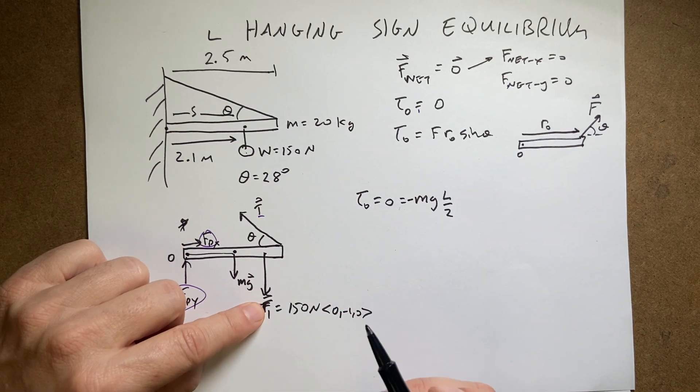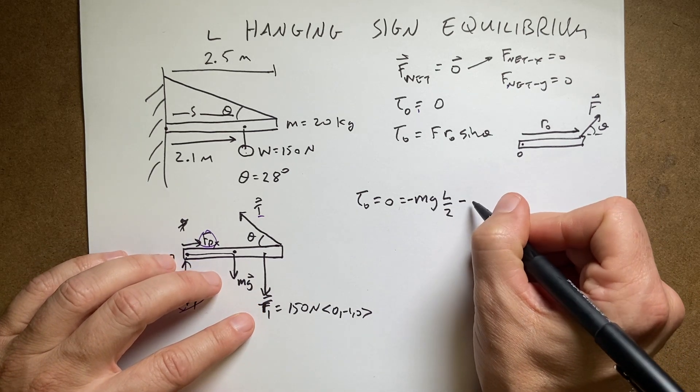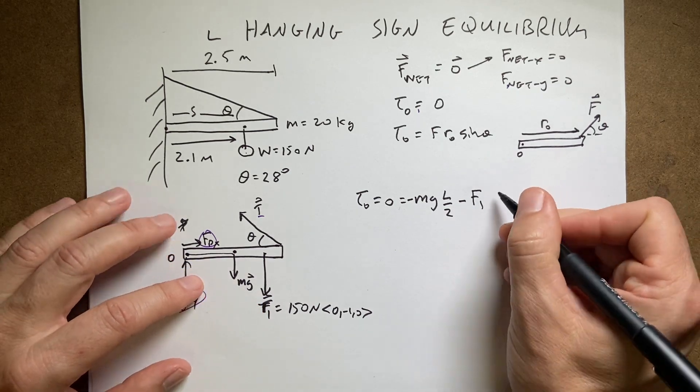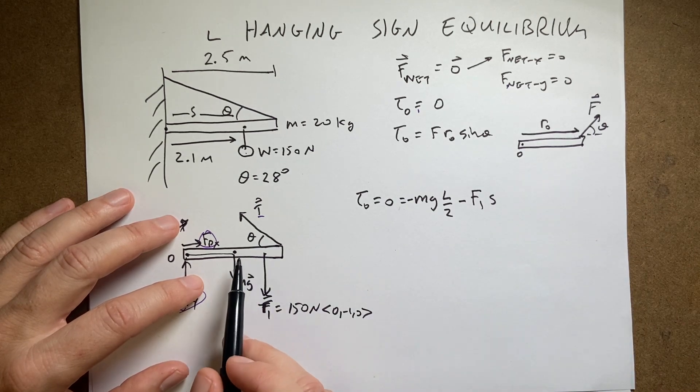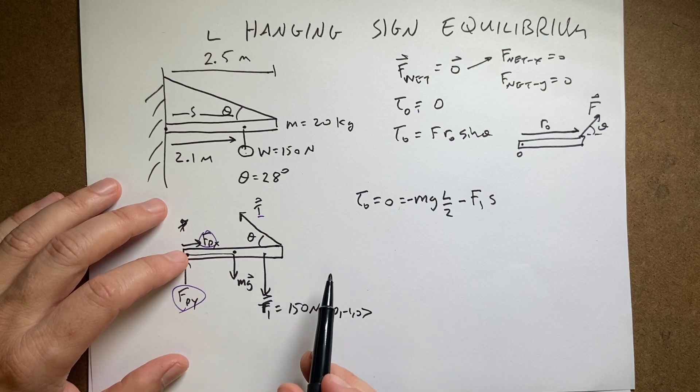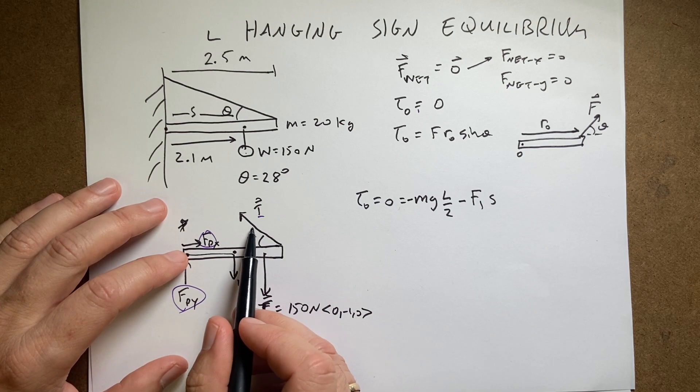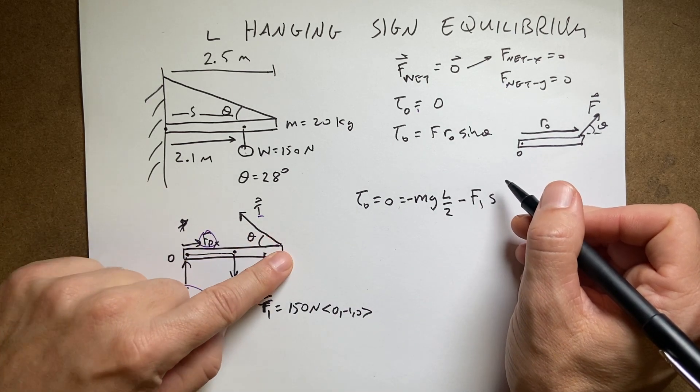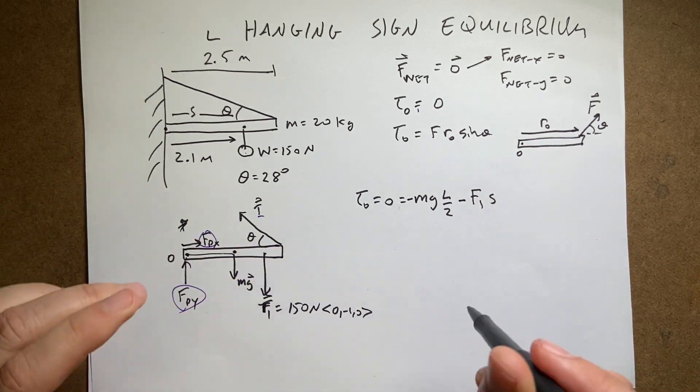What about this force? Well, this is the same thing, right? This is just going to be minus F1 times S times sine of 90, because again, there are 90 degrees between that and that. And it's negative because it's clockwise. Finally, I have this force. So it's going to be, would it make it positive or negative? Well, this would make it rotate positive direction.